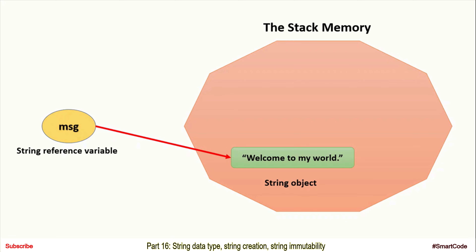What you see on screen is the background process. We have a variable named msg assigned the string value 'welcome to my world.' This value is placed somewhere in memory — the memory JavaScript uses for a string type variable is stack memory. The string value placed in memory is also called a string object, and the variable is a reference variable because it holds a reference to that object. When you print the variable in the console, JavaScript fetches the string value from memory. This string object in memory is immutable — you cannot modify it. If you try to modify it, modifications are not applied to the existing object.